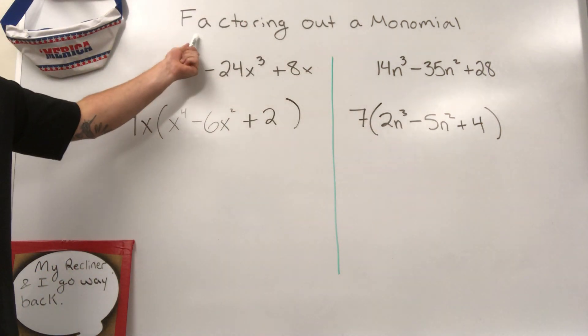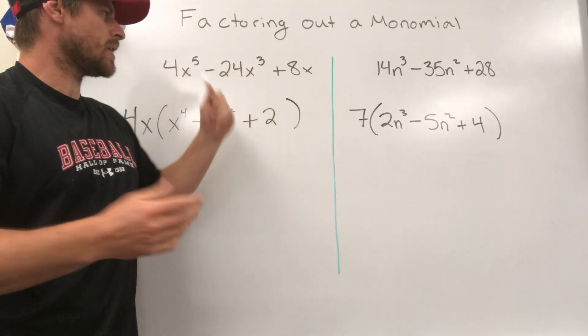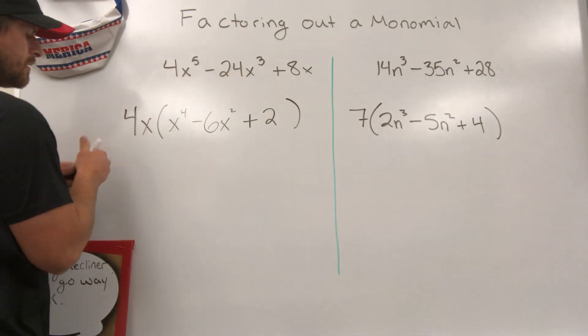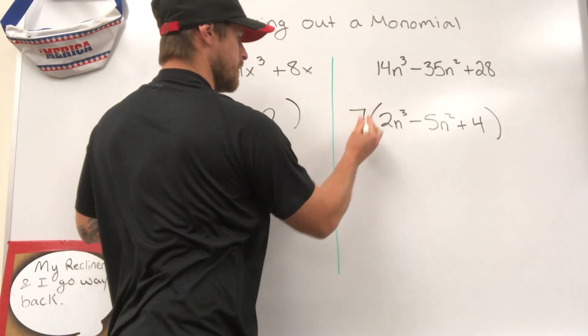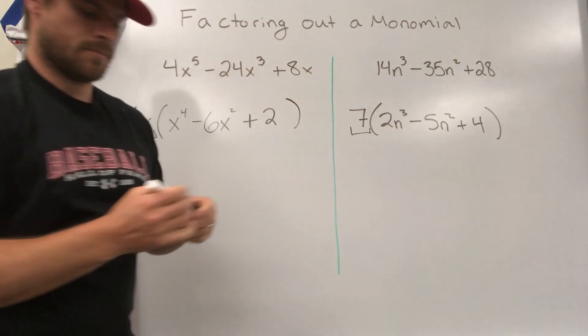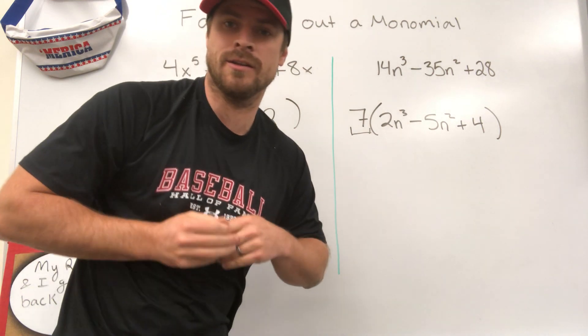Factoring out a monomial. One, two, three terms - trinomial. We factored out a single term. We factored out a single term. Hopefully this makes sense. Study hard and good luck on your upcoming test.